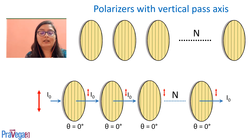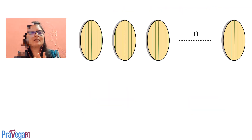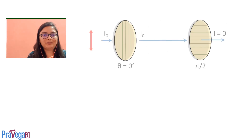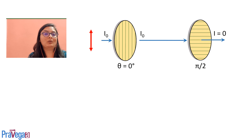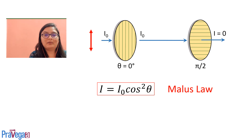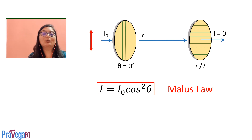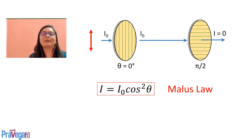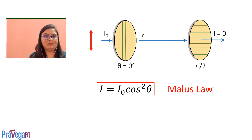The second simple case is if we had just two polarizers arranged perpendicularly. By Malus's Law, I = I₀cos²θ, where θ is the angle between the two polarizers. With θ = π/2, cos(π/2) = 0, so the net output intensity would be zero.